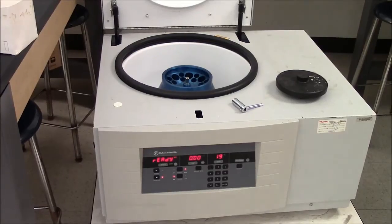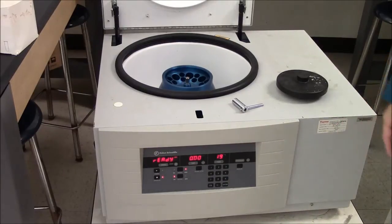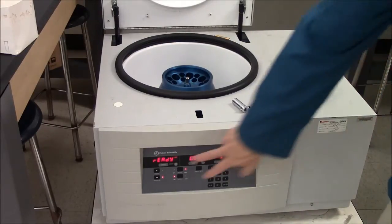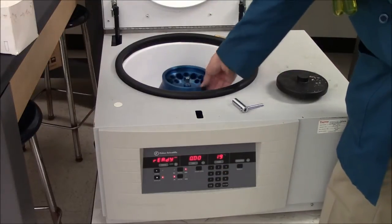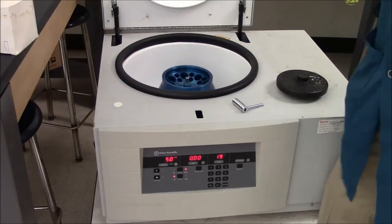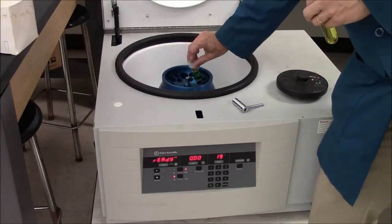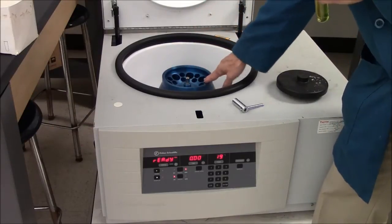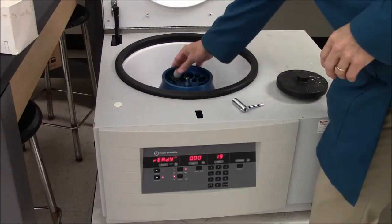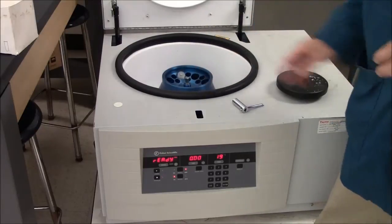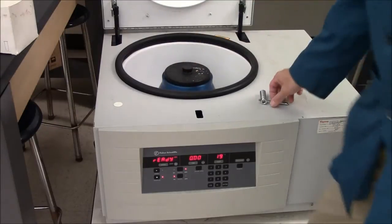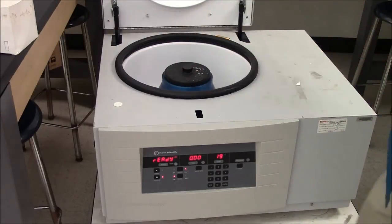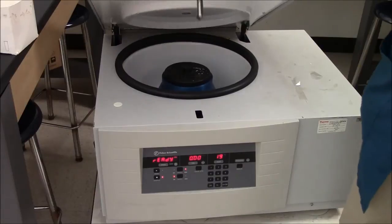This is the centrifuge we'll be using. It's a Marathon centrifuge. It has a control panel here, and inside there's this rotor. Always need tubes opposite each other. So there I've got my balanced tubes opposite each other. The rotor has a lid.